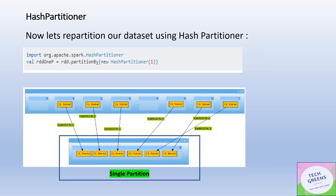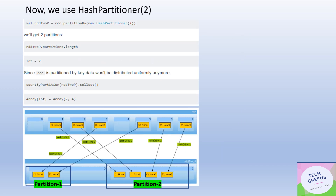Let's now apply the Hash Partitioner explicitly. We create a `HashPartitioner` with the number of partitions we want. Here, we're converging eight partitions into a single partition using `HashPartitioner(1)`. It fetches all the different partitions and moves them into a single bucket — a single partition.